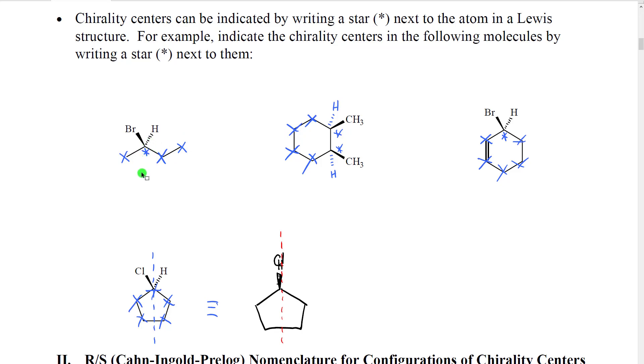So now we look at the four groups that are attached to that atom. There's a bromine, there's a hydrogen, there's a CH3, and then there's a CH2CH3. So these are clearly all different from each other. This would be a chirality center and we put a star next to it.